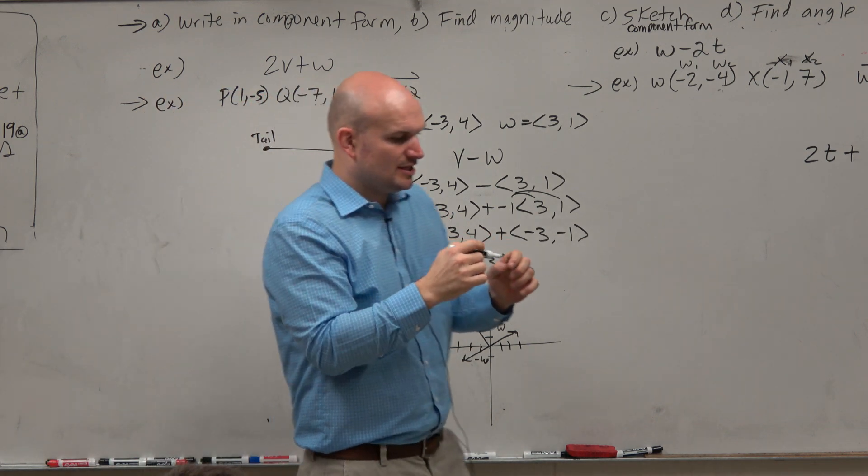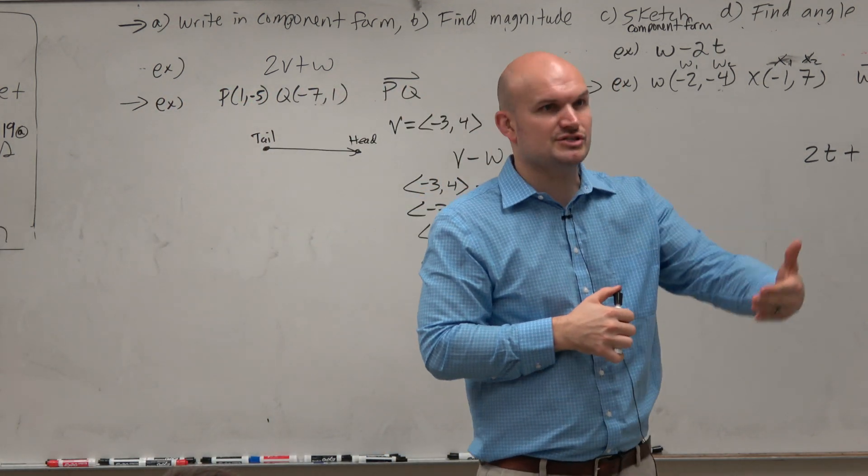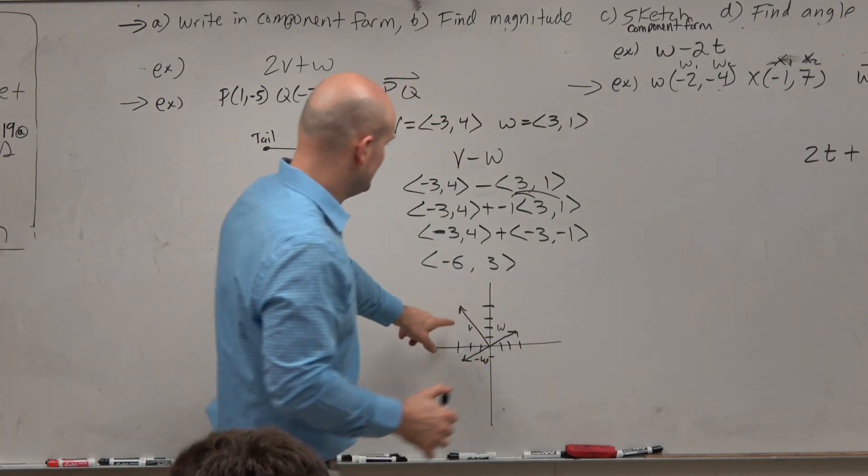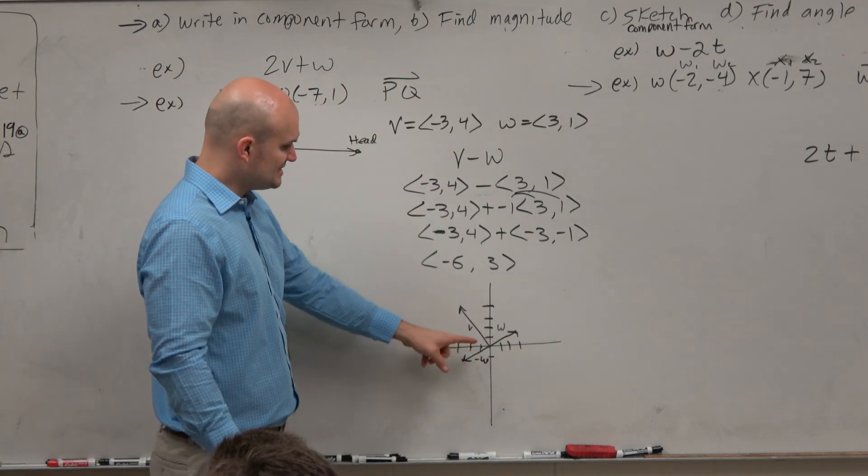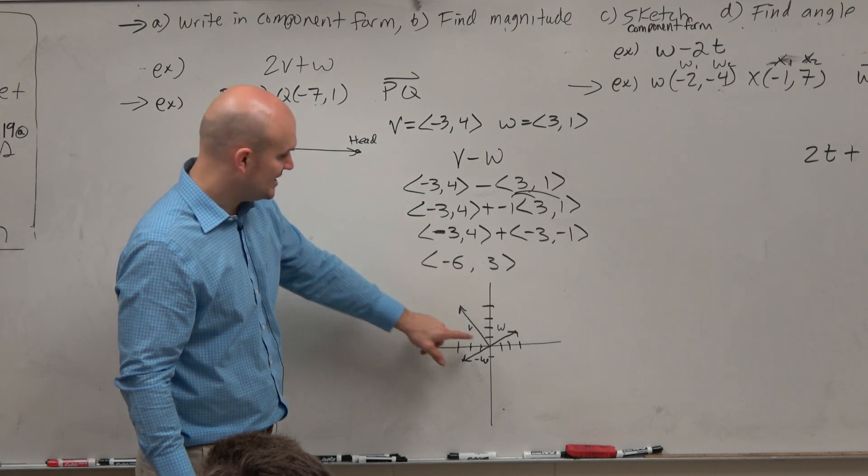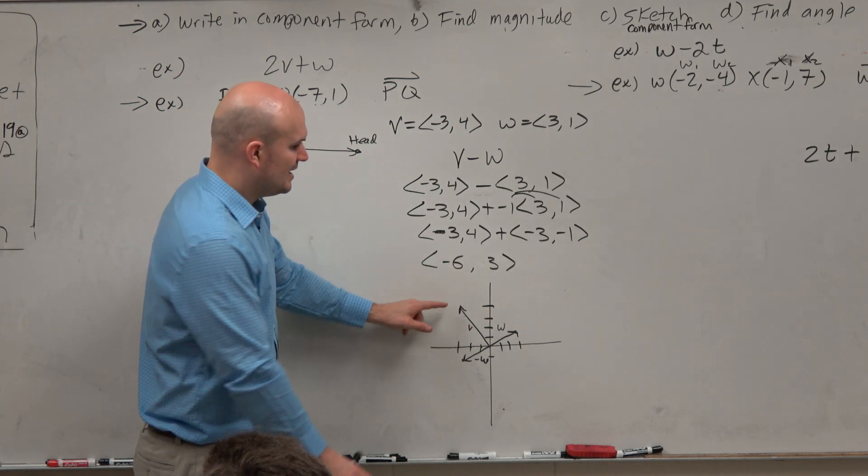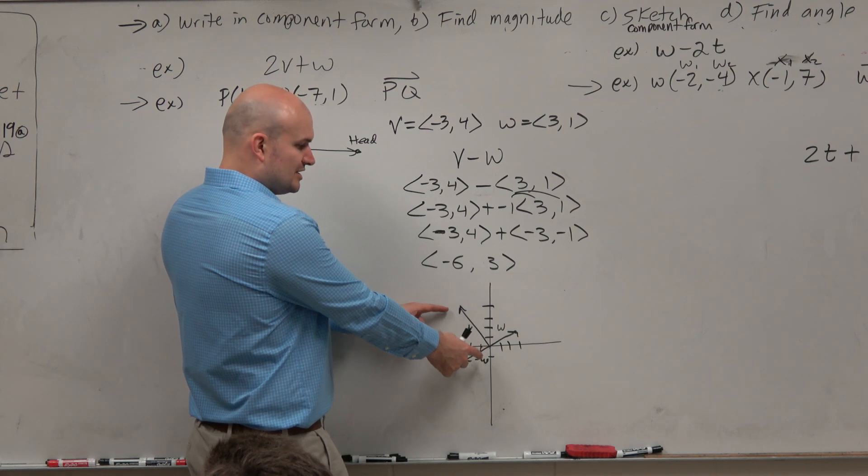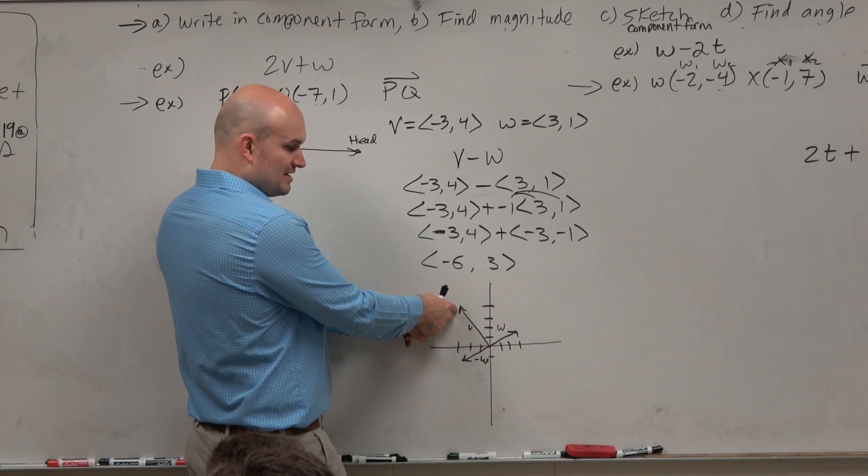When you're adding vectors, basically all we're doing is just like continuing a story. Like you graph one vector, v, and then all you're going to do is take the other vector and add it at the end, right? So you have the tail to the head, and then what you're going to do is take the tail of the other vector and put it on the head of that vector.